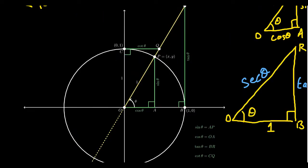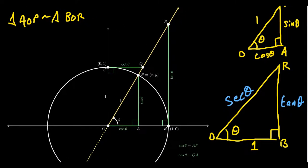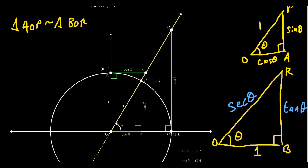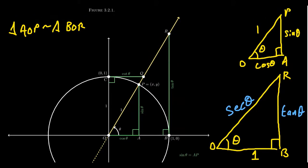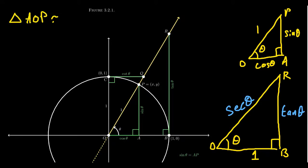Tangent was named after a tangent line; secant was named after a secant line. The other two — cotangent and cosecant — get similar treatment but come from complements. We're going to show that triangle AOP is similar to triangle QOC, which is this triangle in our diagram.